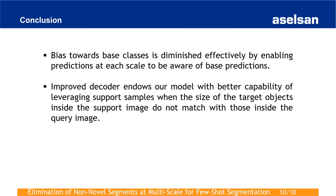As a conclusion, bias towards base classes is diminished effectively by enabling prediction at each scale to be aware of base predictions, and our improved decoder endows the model with better capability of leveraging support samples when the size of target objects in a support image does not match those in the query image. Thanks for your attention. We invite everyone to our poster for further details.